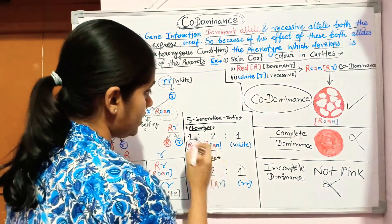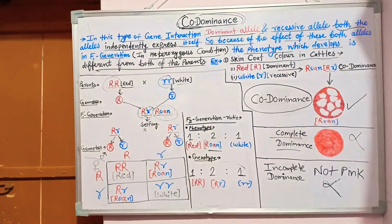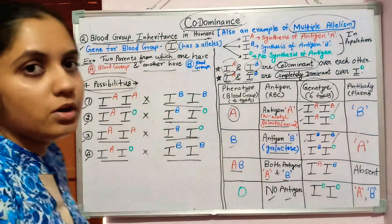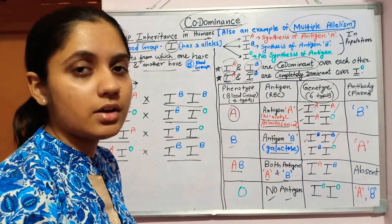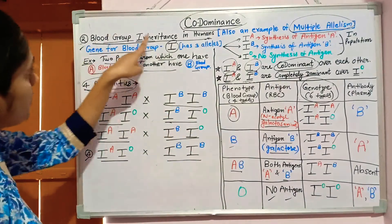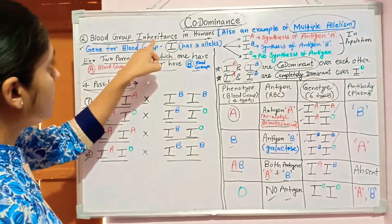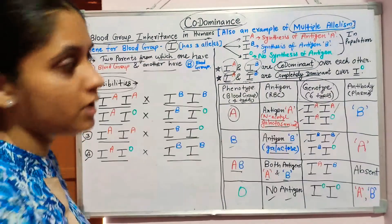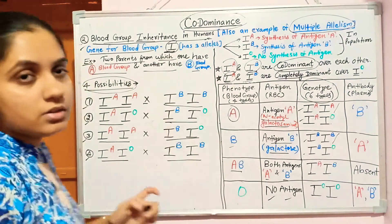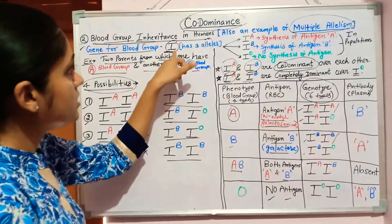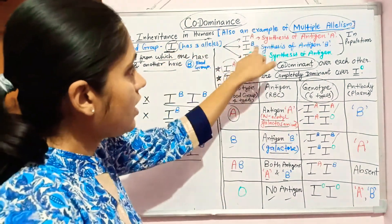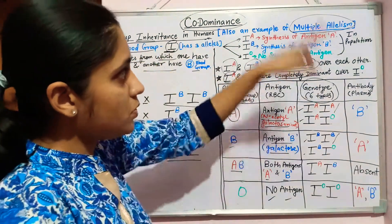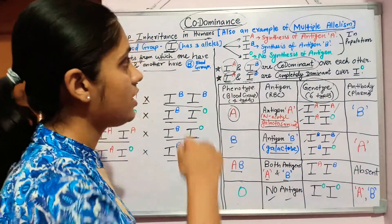The genotype is the same as Mendel's monohybrid cross, but the phenotype is different because of co-dominance. The second example of co-dominance is blood group inheritance in humans. The gene for the blood group, gene I, has three alleles: I^A, I^B, and I^O.